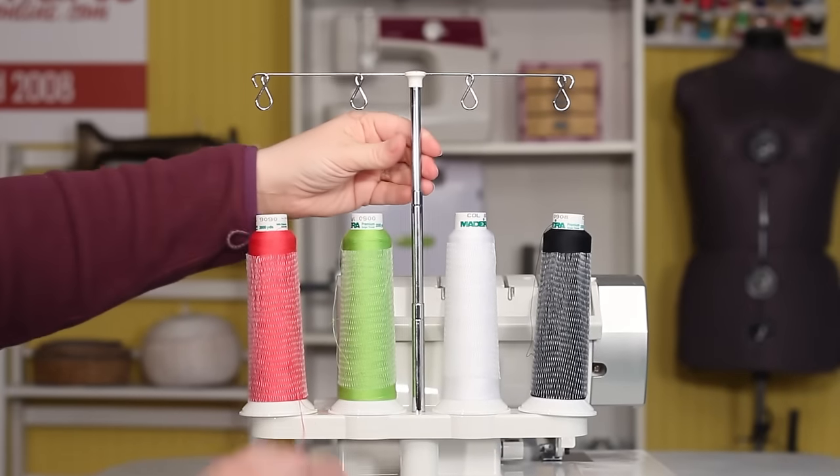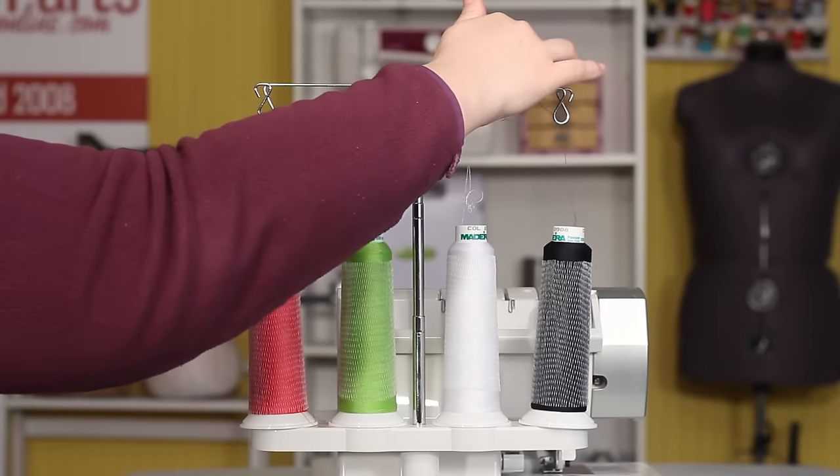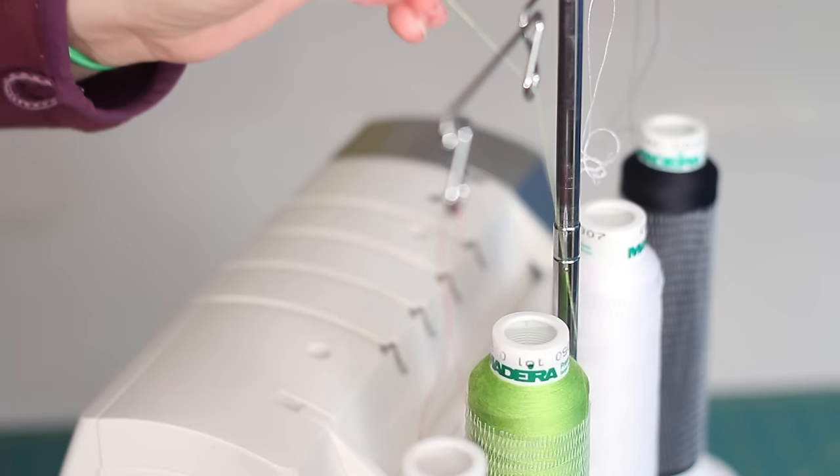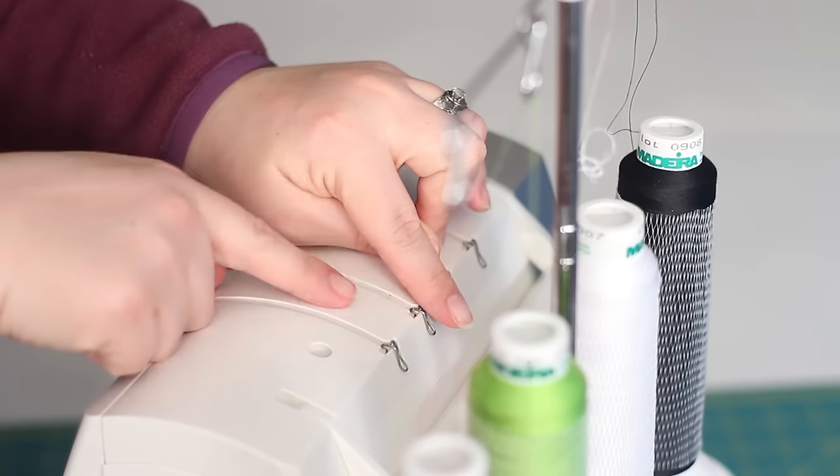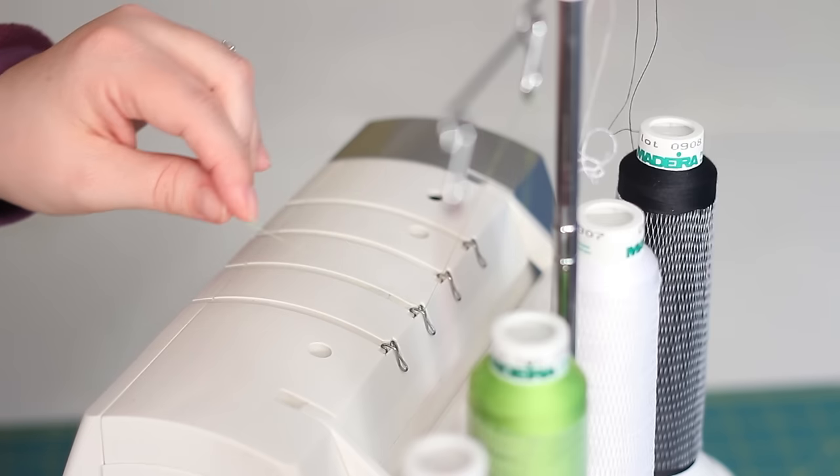Pull your thread stand up to the highest position and bring your thread ends up to the loops. Now we're going to start with our upper looper thread, which is my bright green thread. Pop it into the little metal clip, which is the second from the right, and just lay it in the groove.